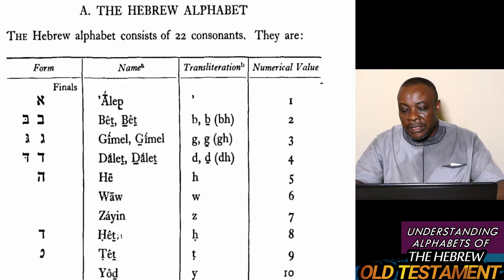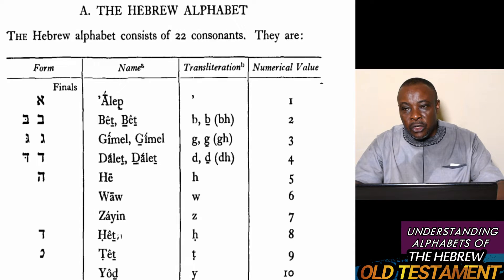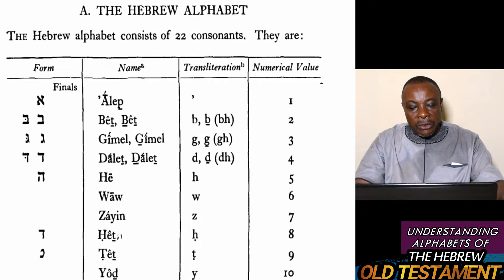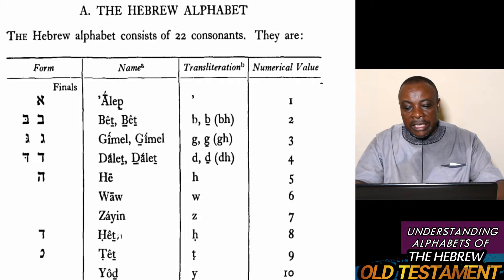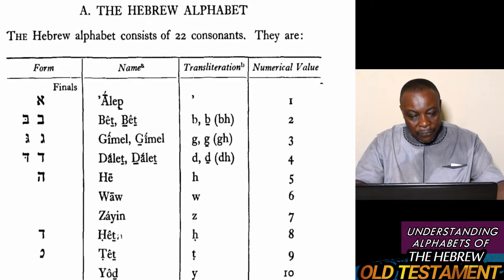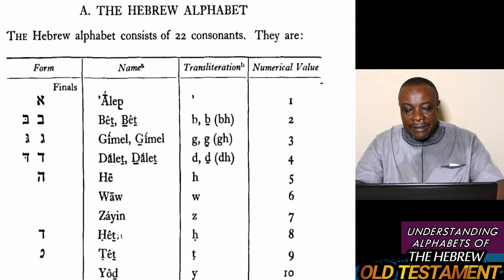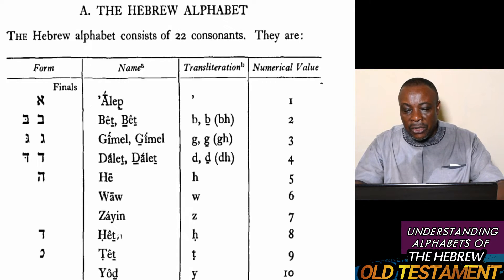Now, having said that, we will need to look at the numerical value of these letters. As seen on the slide, Aleph by numerical value is 1. Bet is 2. Gimel is 3. Dalet is 4. He is 5. Waw is 6. Zayin is 7. Heth is 8. Teth is 9. Yod is 10.